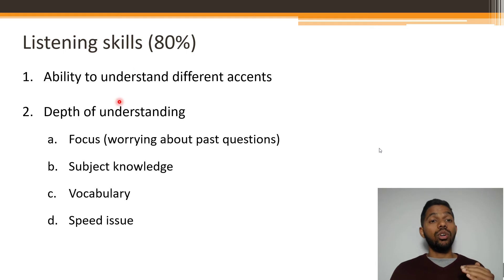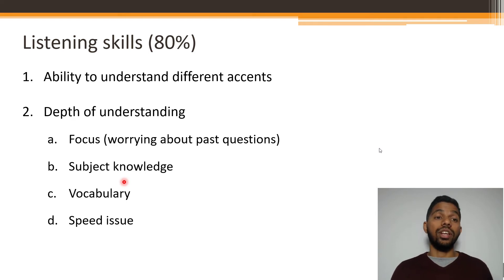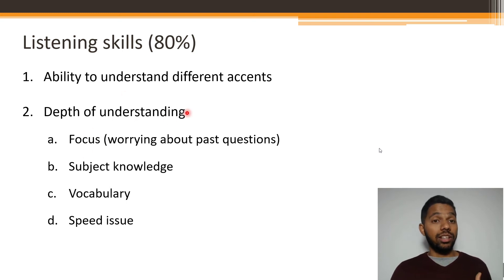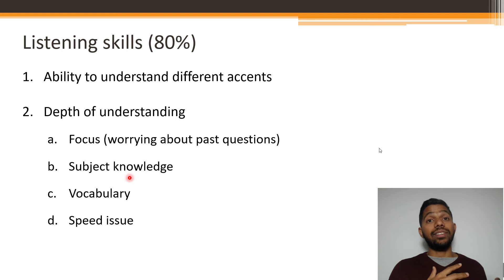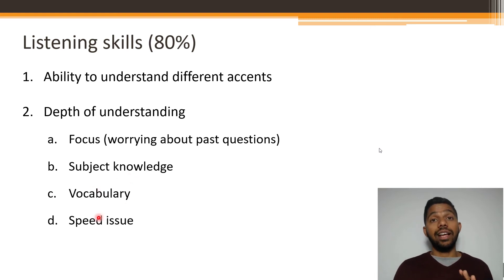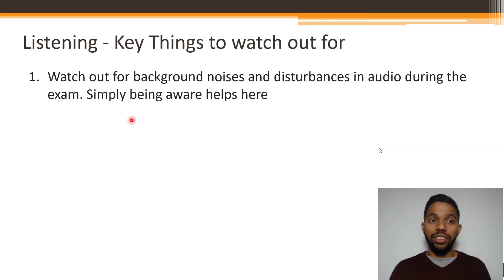If you have a poor listening score, you can look at these issues and figure out where you're struggling and what areas you need to work on. These are all skills that can be learned. If you're unfamiliar with different accents, you can listen to various accents and pick up that skill. You can also listen to different types of topics to build subject matter knowledge. These are all learnable, and I'm going to show you how.